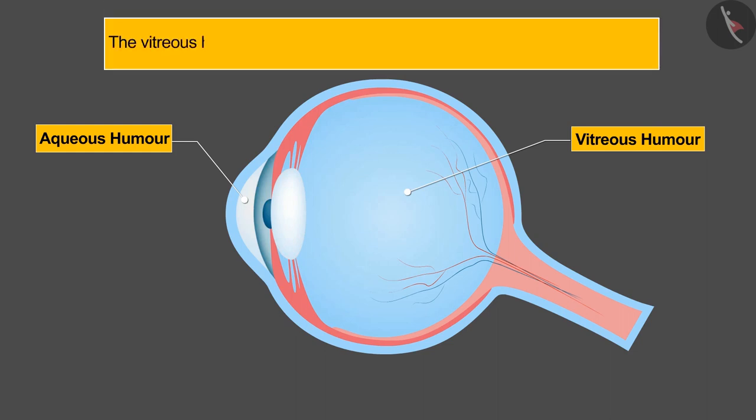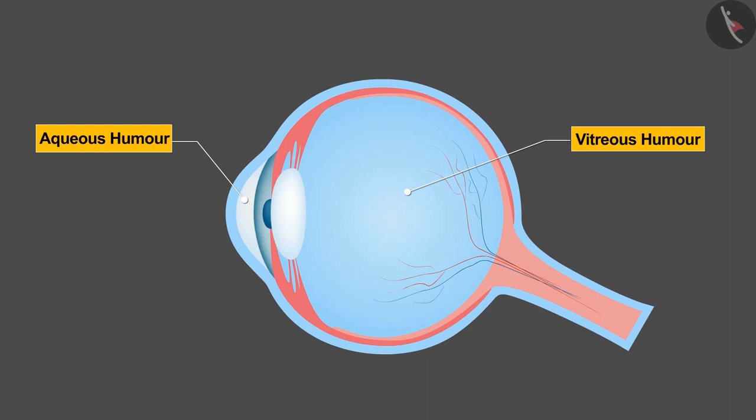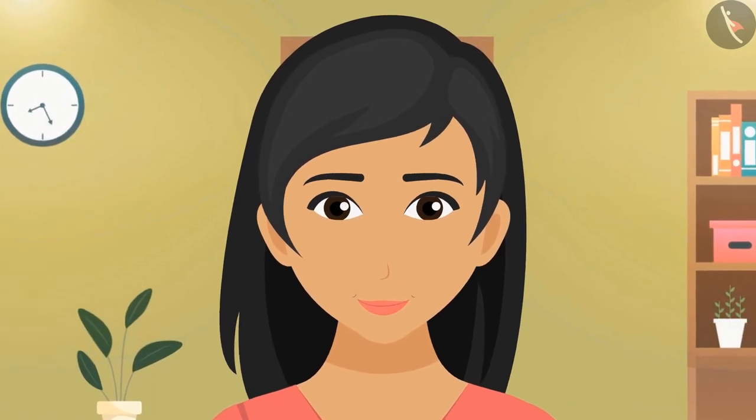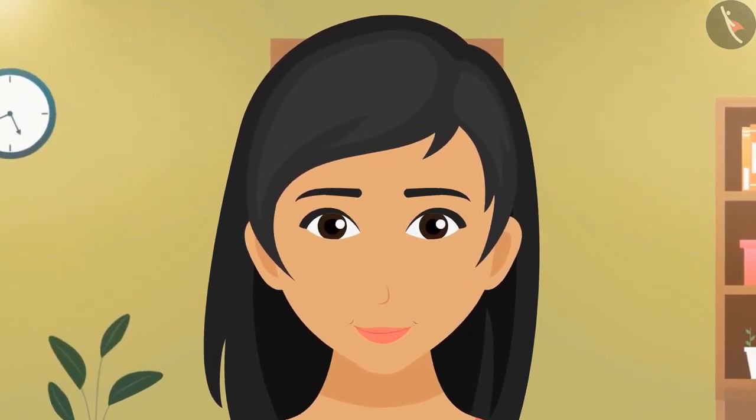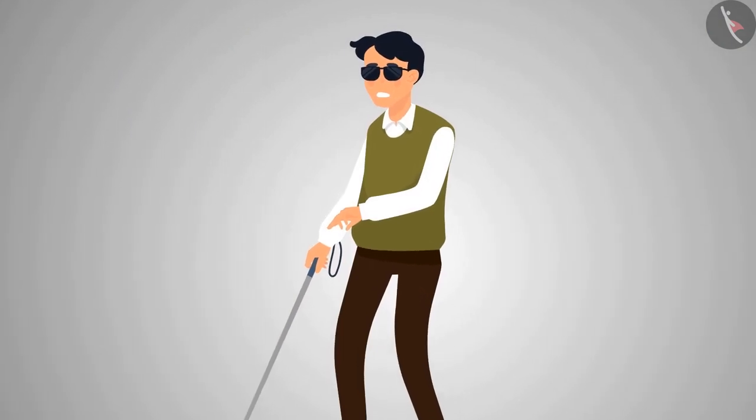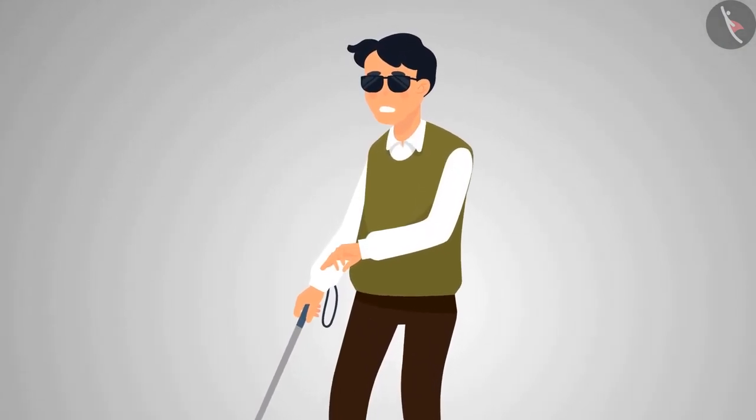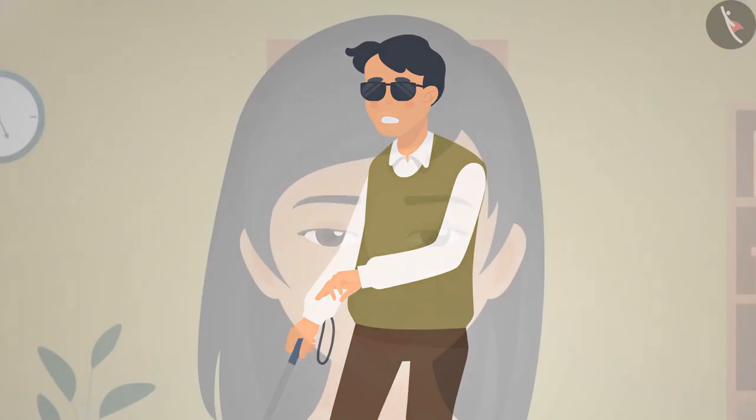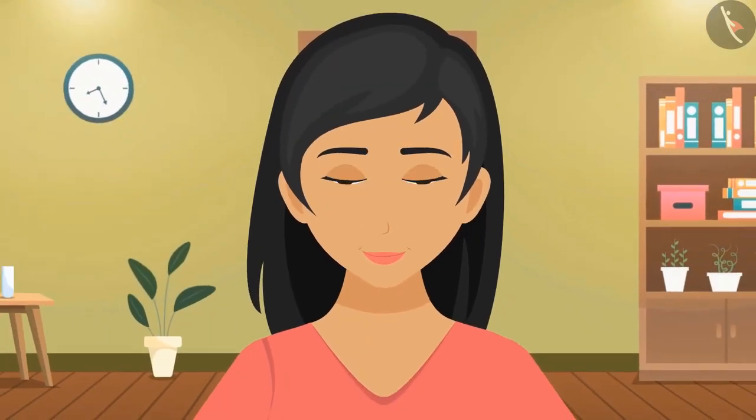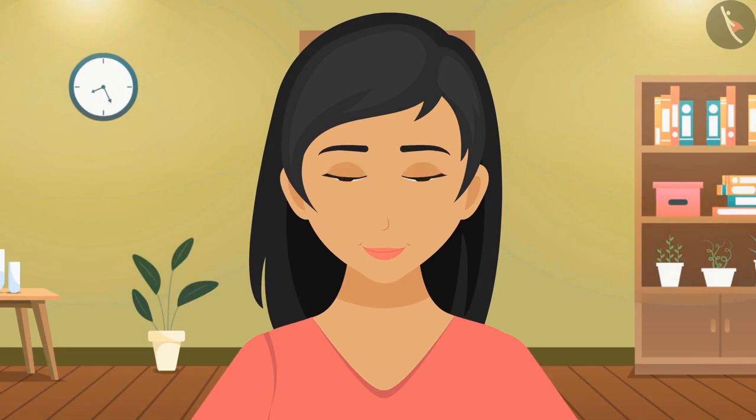The second tissue filling is the vitreous humor, which helps in maintaining the round shape of the eyes. So in today's video we got to know about the different parts of the eyes and their functions. The eyes are as sensitive on the outside as well as on the inside, and there are people in the world who do not have eyes and cannot see anything. So we should consider ourselves very lucky and be thankful that we are able to see this world with our own eyes.